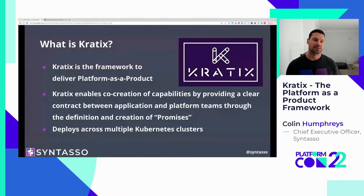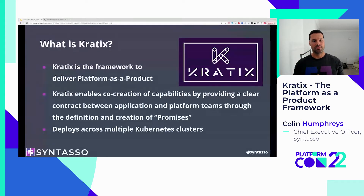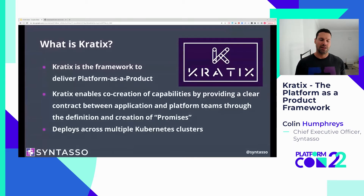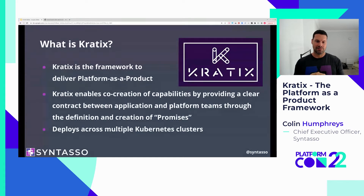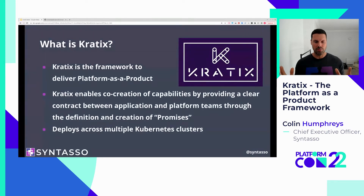Kratix is the framework to deliver platform as a product. Kratix enables application teams and platform teams to codify the contract between them. They take that definition of what's delivered by the platform team to the application teams and create a promise that's installed into Kratix, making it available on demand as a service across the organization. Kratix deploys across multiple Kubernetes clusters but is able to orchestrate resources either on Kubernetes, off Kubernetes, or a hybrid of both.